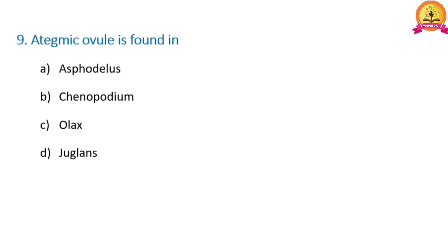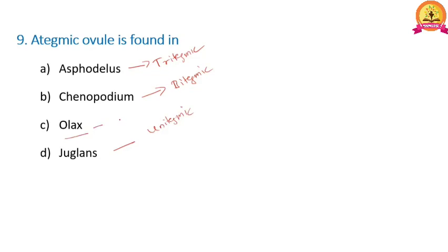Next: ategmic ovule is found in which plant? In Asphodelus, the ovule is tritegmic. In Chenopodium, it is bitegmic. In Juglans, it is unitegmic. But in Olax, there are no integuments. Therefore, ategmic ovule is found in the Olax plant. Option C is correct.